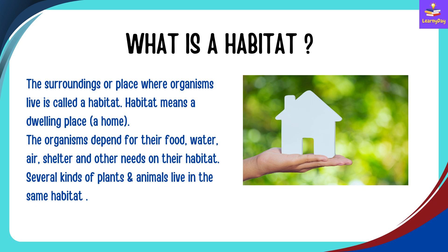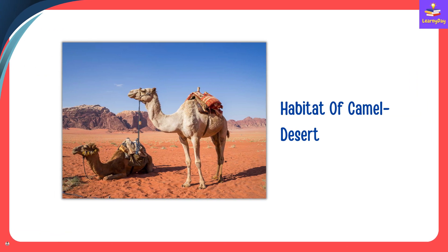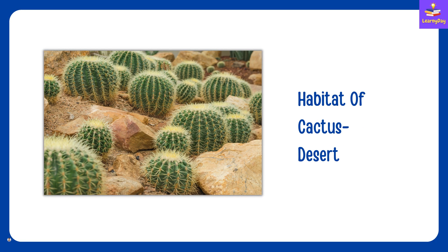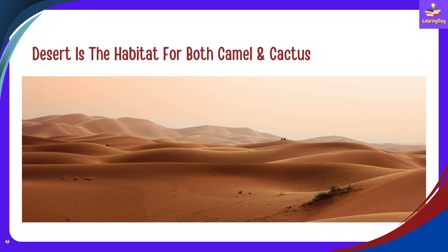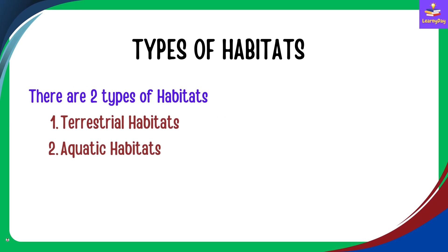Several kinds of plants and animals live in the same habitat. For example, a camel lives in a desert, so the habitat of the camel is desert. Cactus also grows in a desert, so the habitat of cactus is desert. We can say that desert is the habitat for both camel and cactus. Whales live in oceans, so the habitat of whales is oceans.